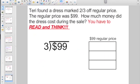Check out this one. Terry found a dress marked two-thirds off the regular price. The regular price was $99. How much money did the dress cost during the sale? So $99 is the regular price. I'm talking thirds here, so I still start off divide by the denominator.